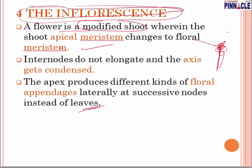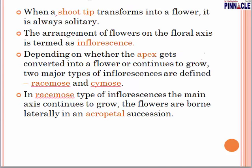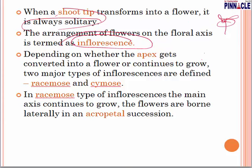The apex produces different kinds of flower appendages laterally at successive nodes instead of leaves. Instead of leaves, the apical will start producing appendages like calyx, corolla, or something like that. When a shoot tip transforms into a flower, it is always solitary. The arrangement of flowers on the floral axis is termed as inflorescence.